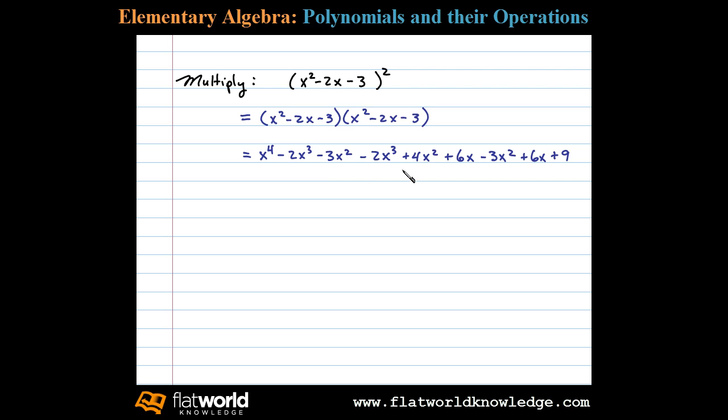After we multiply it out, we then combine like terms. I'll bring down x to the fourth. Notice here we have negative 2x cubed minus 2x cubed. Those are like terms and that adds up to negative 4x cubed.